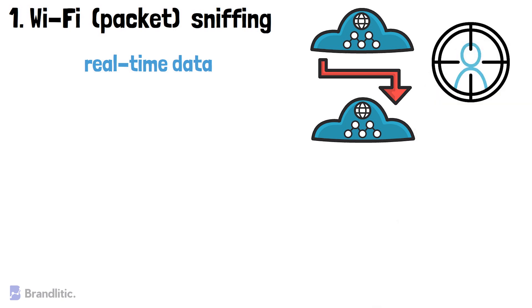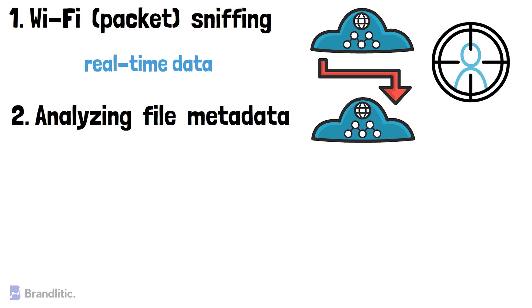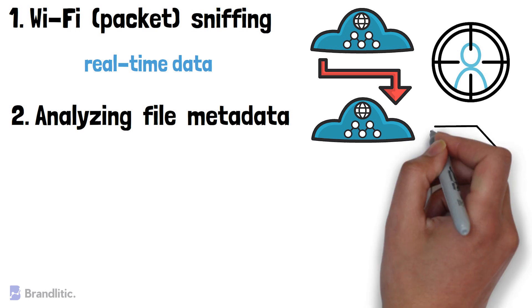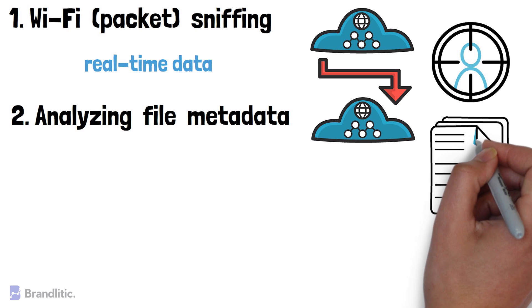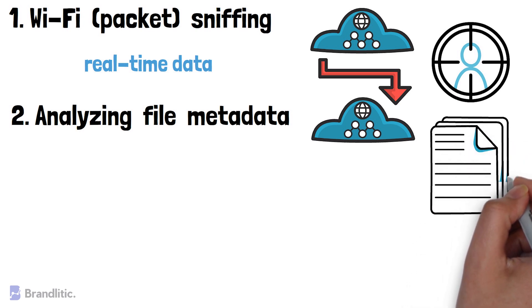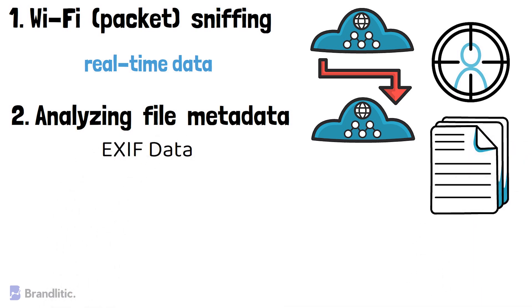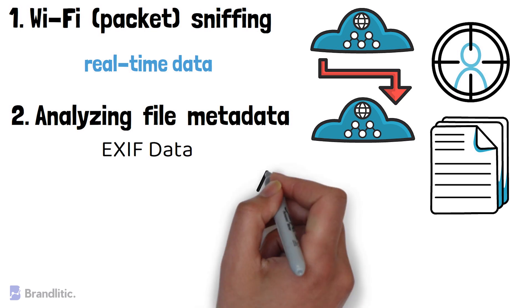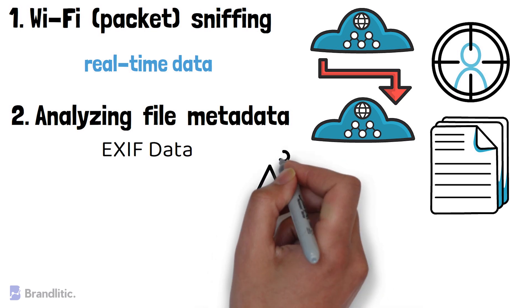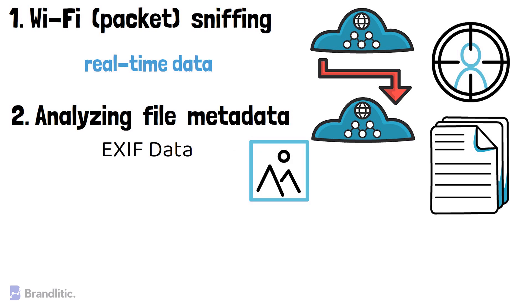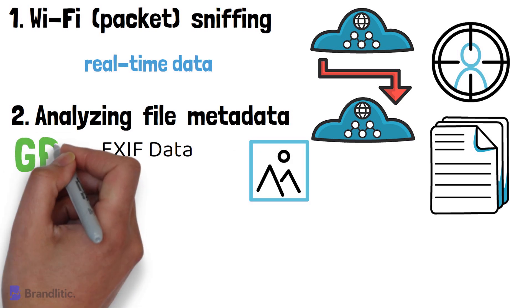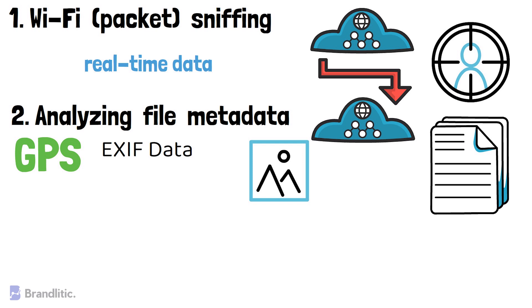2. Analyzing file metadata. By simply looking at your file metadata, an attacker can learn a great deal about you. For example, all photos have EXIF data, which shows the model of your smartphone or camera used to take the photograph, its resolution, and the time the photo was taken. Moreover, it can reveal your location if GPS was enabled when the photo was taken.